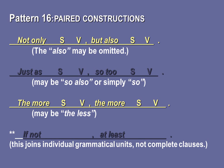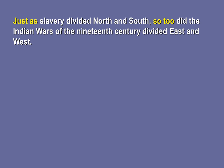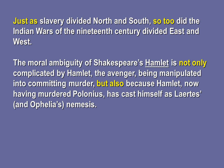Just as slavery divided North and South, so too did the Indian Wars of the 19th century divide East and West. The moral ambiguity of Shakespeare's Hamlet is not only complicated by Hamlet the Avenger being manipulated into committing murder, but also because Hamlet, now having murdered Polonius, has cast himself as Laertes and Ophelia's nemesis.